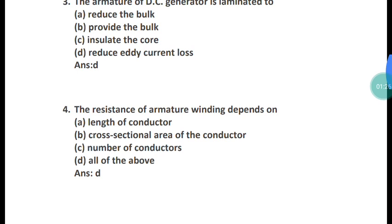Question 4: The resistance of armature winding depends on what factors? The factors are: the length of the conductor, the cross-sectional area of the conductor, and the number of conductors. The correct answer is option D — all of the above.